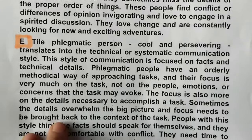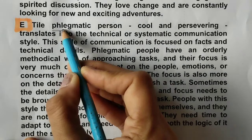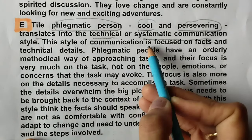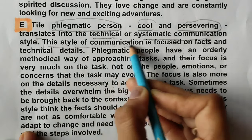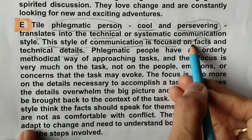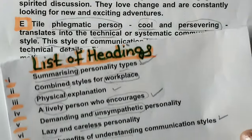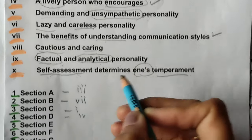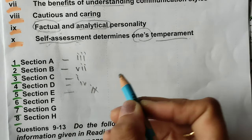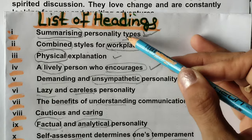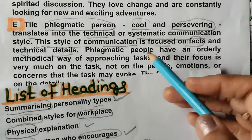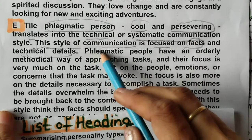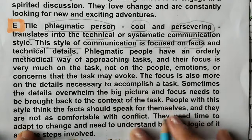Now paragraph E. The phlegmatic person — another person — cool and preserving — translates into a technical or systematic communication style. 'This style of communication is focused on facts and technical details.' So facts were there — 'factual and analytic personality.' With paragraph E we will select number 9.